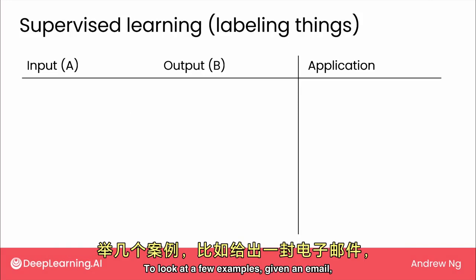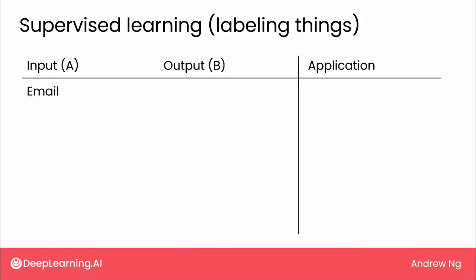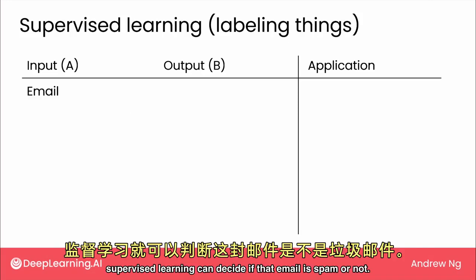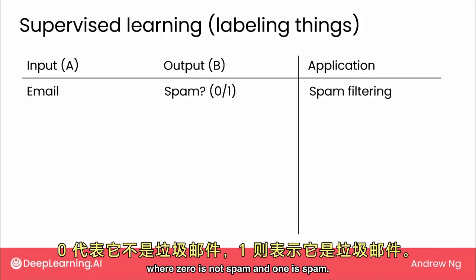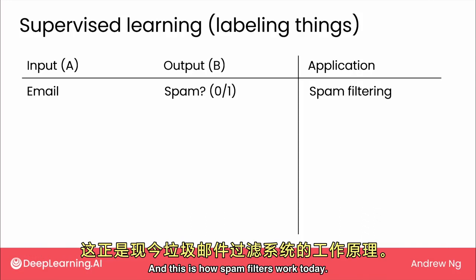To look at a few examples, given an email, supervised learning can decide if that email is spam or not. So the input A is an email and the output B is either 0 or 1, where 0 is not spam and 1 is spam. And this is how spam filters work today.